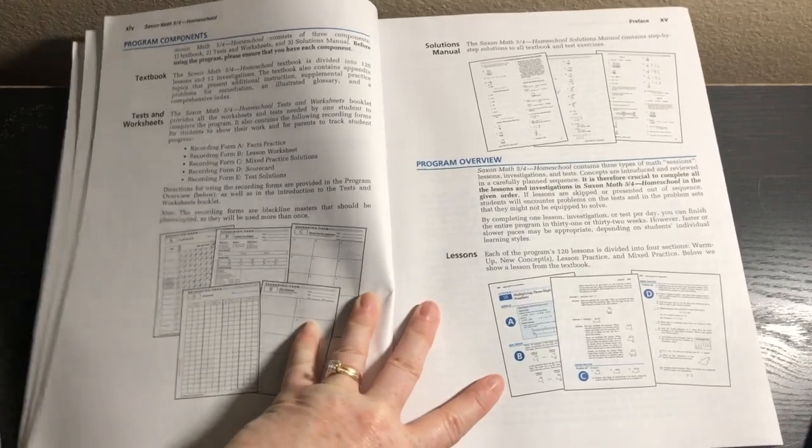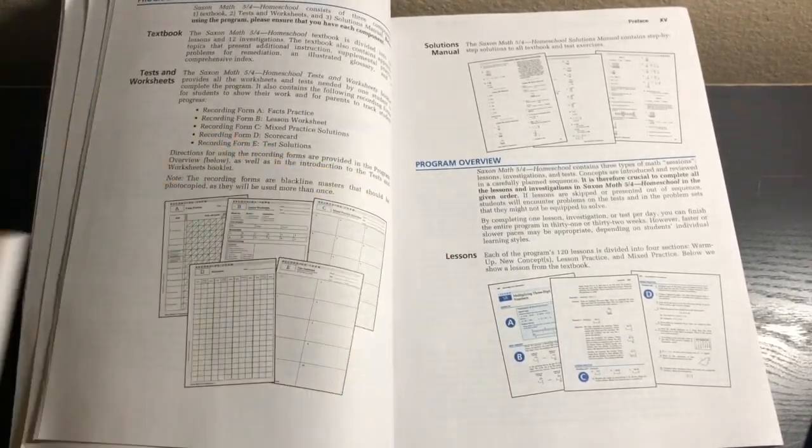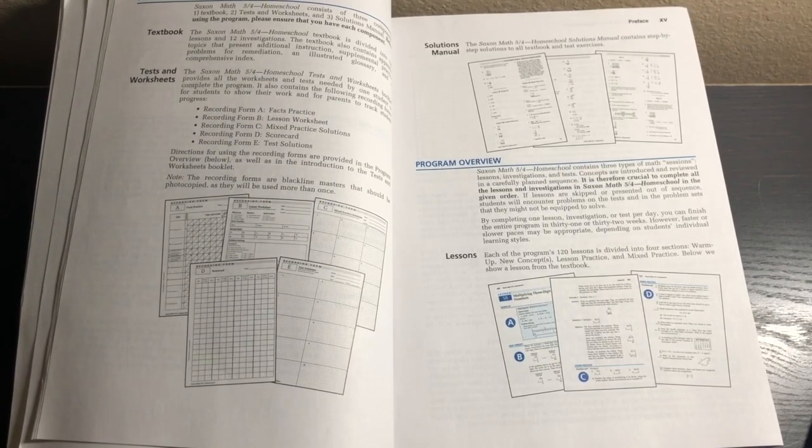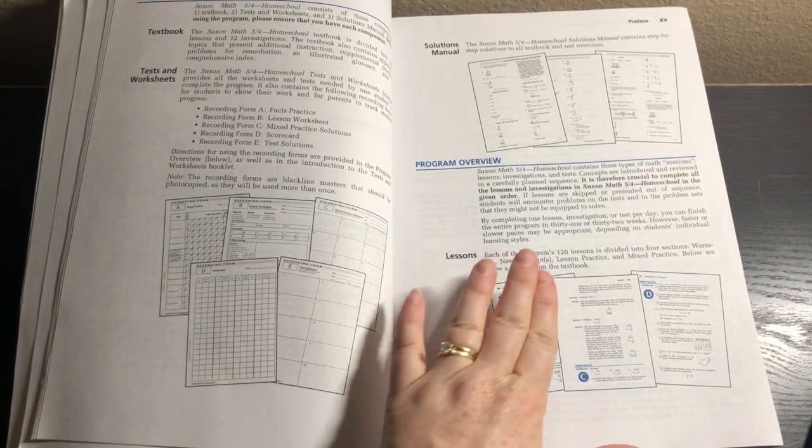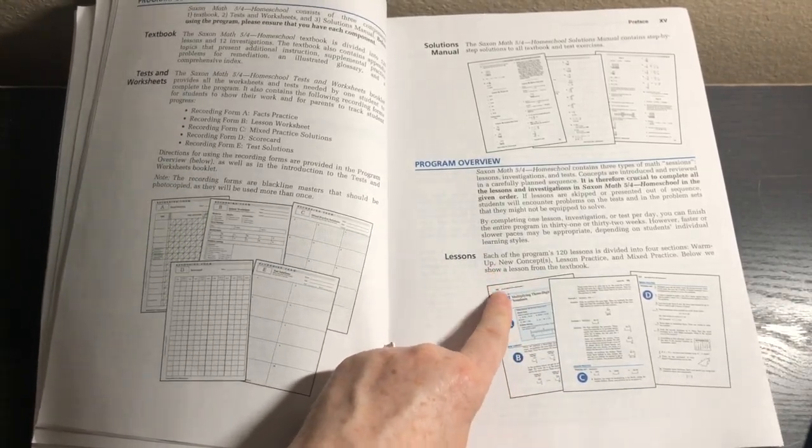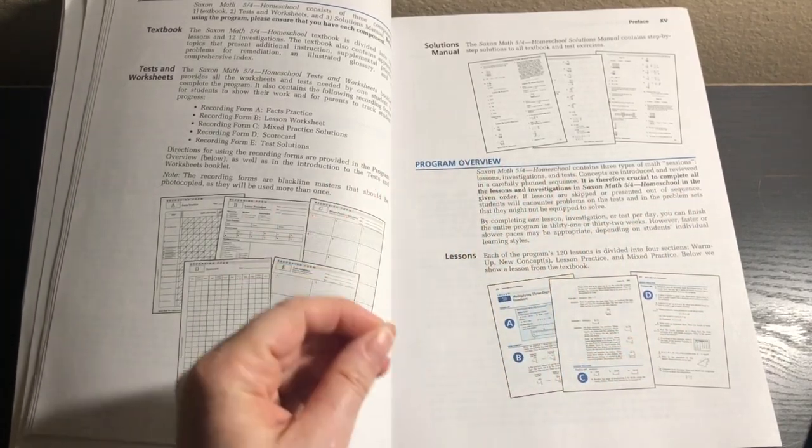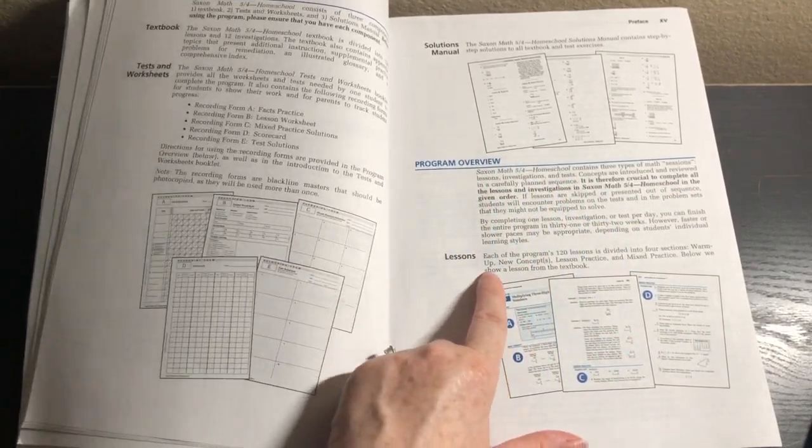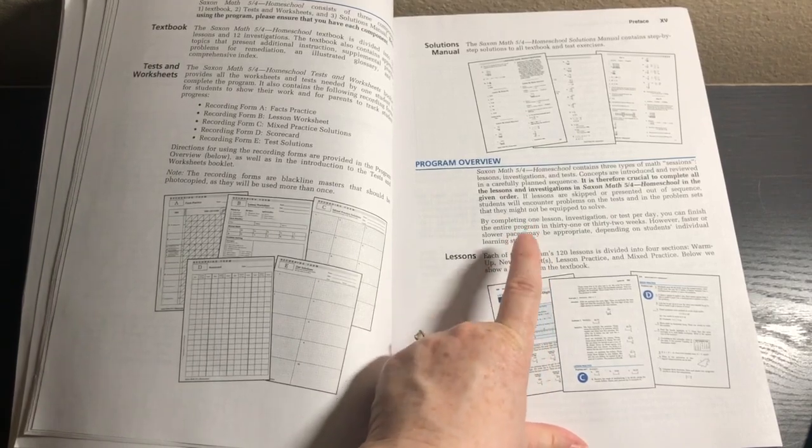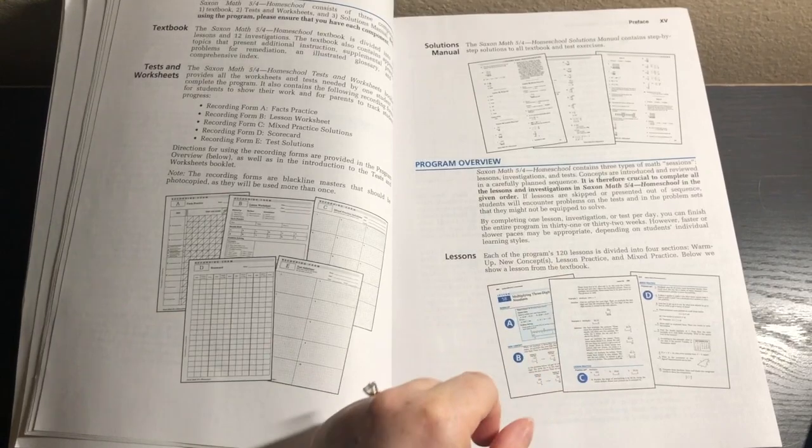There's the textbook, the tests and worksheets which is this book I have here, and the solutions manual. There is no teacher guide because this is written to the student. It's crucial to complete all the lessons and investigations. So there's 120 lessons, but don't think that it's only going to take you 120 days.